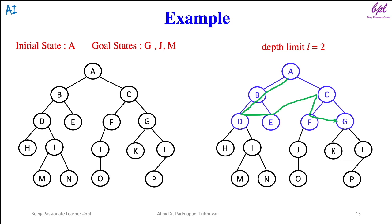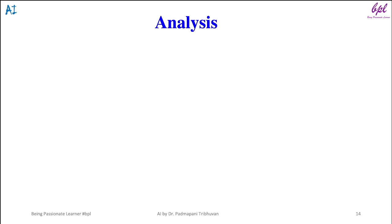Then G will be visited. G is a goal state, so the algorithm has searched the goal state successfully and the algorithm will terminate here. Carefully observe that there are three goal states: G, J, and M. The algorithm has reached a goal node which is at the shallowest level — that is goal G at level two. This is one advantage of iterative deepening DFS: it guarantees finding the goal node of minimal path.